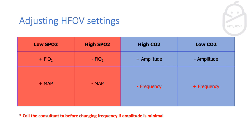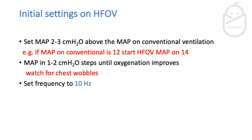When setting up the ventilator — transitioning from conventional ventilation to high frequency — first check what your MAP was in conventional ventilation mode. For example, if it was 12, add 2 and start at a MAP of 14. You can go up by one to two centimeters of water until oxygenation improves. Also check for chest wobbles, as this is an indication of effective ventilation. Good chest movement or vibration with the ventilator is a positive sign. Set frequency to 10.